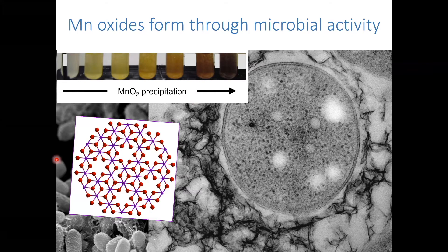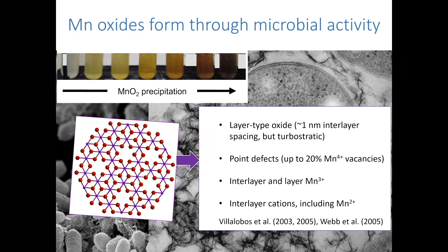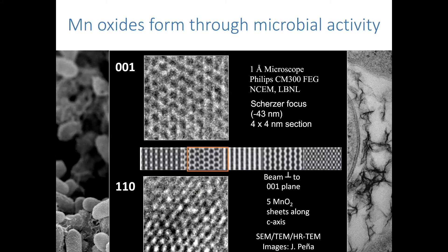The products of manganese oxidation are layer-type manganese oxides with about one nanometer interlayer spacing and stacking disorder between the sheets. They harbor a large proportion of point defects — up to 20% manganese vacancy sites in the sheets. The consequence of those vacancies is the presence of layer and interlayer cations of lower valence for charge compensation. In these TEM images you can start to appreciate these defects, the vacancy sites, and the high amount of structural disorder at the atomic scale.